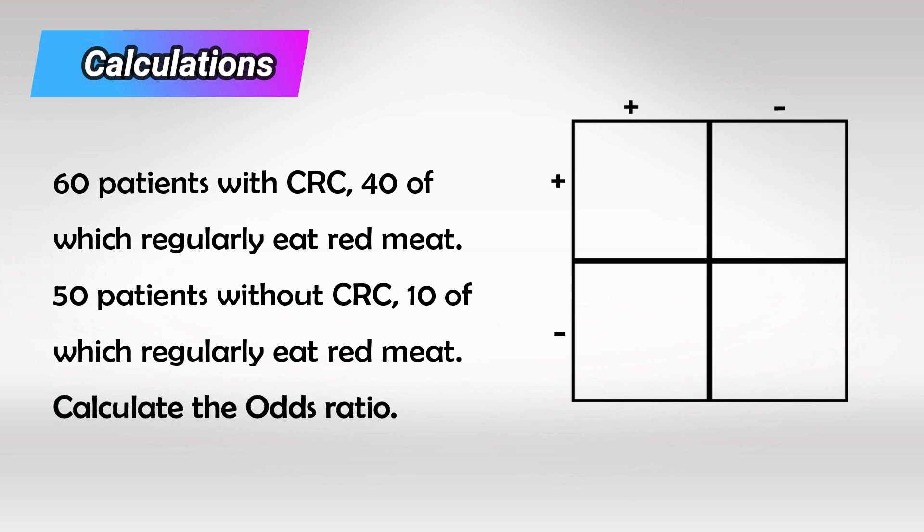To draw the 2x2 square, we have the disease on top, and the risk factor on the left side.